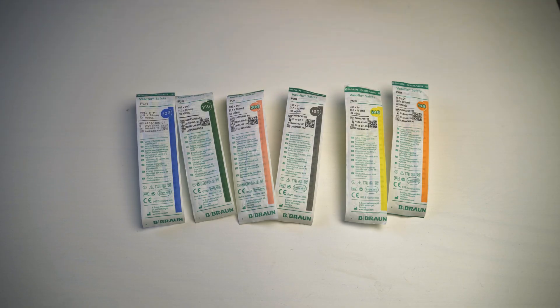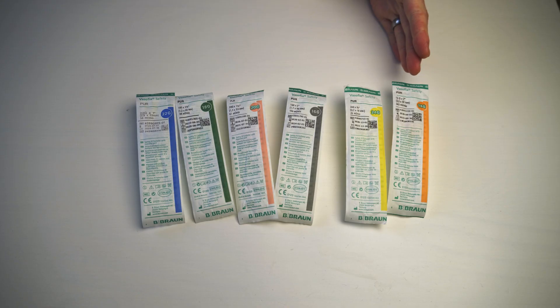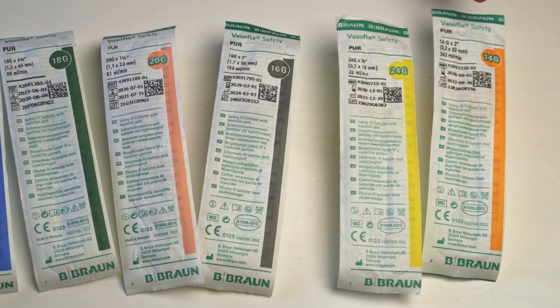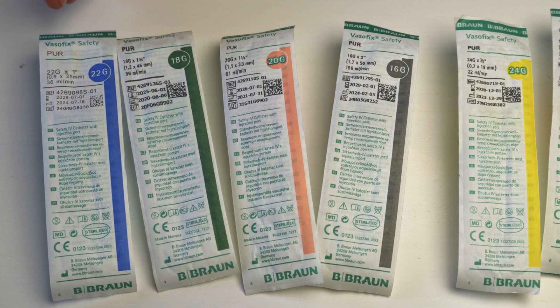These IV cannulas are measured in a gauge. The smaller the number, the bigger the needle. So the biggest that you'll probably see on an ambulance is a 14 gauge. You do get bigger than that, but that is the biggest needle that we carry. And the 22 gauge is the smallest needle that we carry.